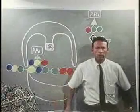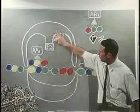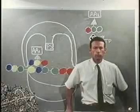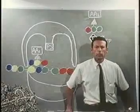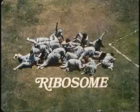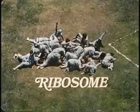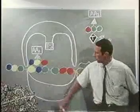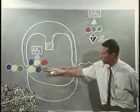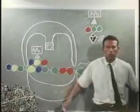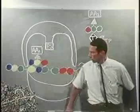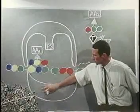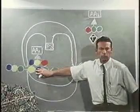The ribosome is composed of a large and of a small subunit. These are depicted in the film as tumbling, rolling clusters of body — amorphous by themselves, but organized and structured when in the act of translating the message. First, the small subunit, with the aid of an initiation factor, captures the message.